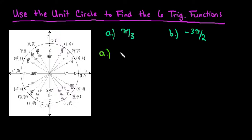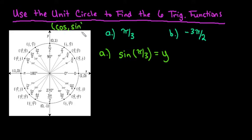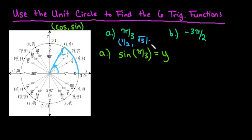The first one we're going to start with is sine. Sine of pi over 3 corresponds to the y-coordinate in the coordinate plane. If it helps you to remember, you can always write down that it's always cosine comma sine. We can look at pi over 3, which is this angle here, with an arc length of pi over 3. Remember that if it's positive we always rotate counterclockwise. The coordinate for this first one is 1/2 comma square root 3 over 2. So sine is just the y-coordinate, which is square root 3 over 2 — that's our final answer.